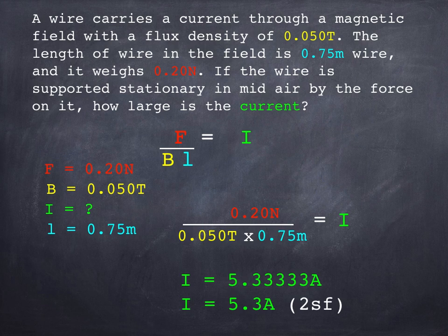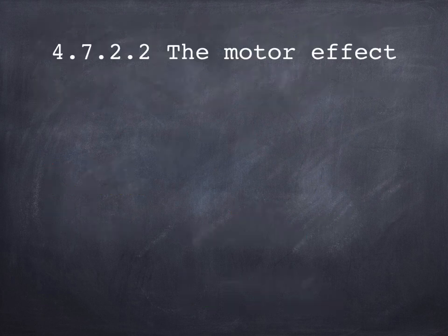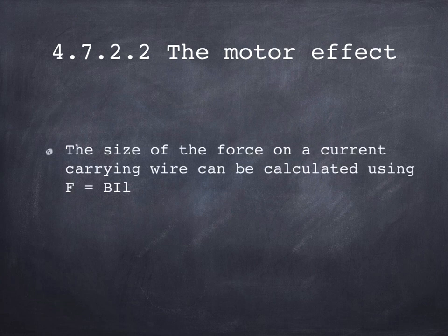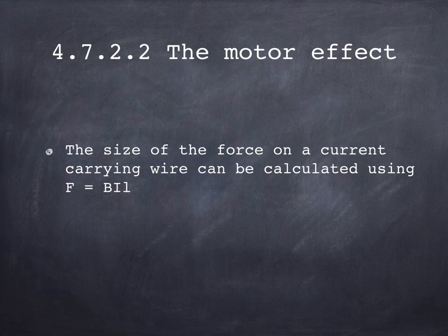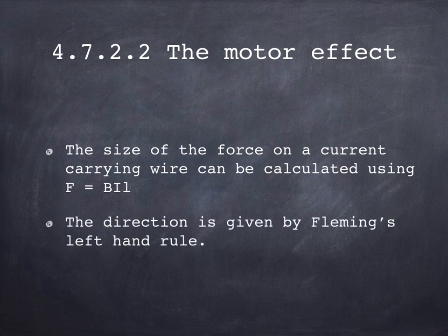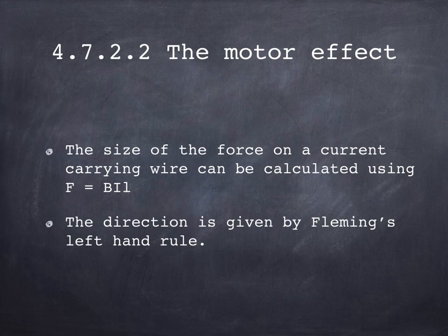That really is all there is to this. So to summarize, the size of the force on a current carrying wire can be calculated using F equals BIl: force equals flux density times current times length. The direction, of course, is given by Fleming's left-hand rule.